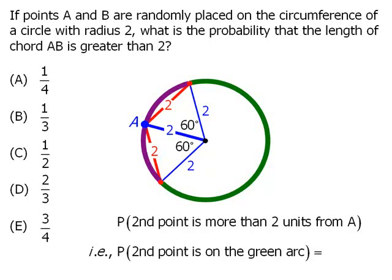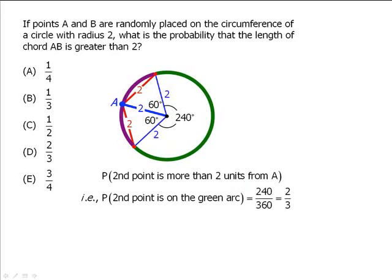From here, we can conclude that this remaining angle must be 240 degrees. So the portion of the entire circle that is represented by the green arc is equal to 240 over 360, which equals two-thirds. So our probability is two-thirds, and our answer is D.